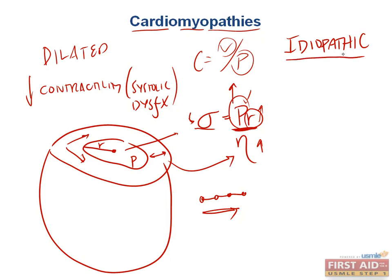They're going to ask you the high-yield causes that tie in biochemistry. For example, ethanol use, alcohol abuse, and wet beriberi — these are high yield because you have to think back to your biochemistry. Both alcohol and beriberi are conditions in which we have deprived the myocytes' mitochondria of thiamine.